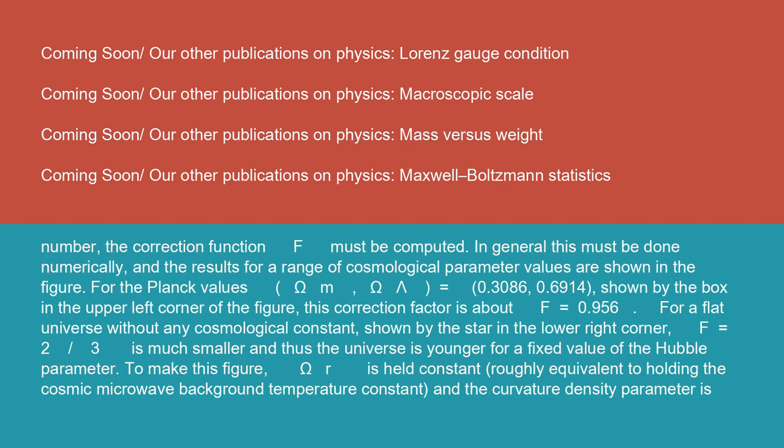To get a more accurate number, the correction function f must be computed. In general, this must be done numerically, and the results for a range of cosmological parameter values are shown in the figure. For the Planck values, omega m, omega lambda equals 0.3086, 0.6914, shown by the box in the upper left corner of the figure, this correction factor is about f equals 0.956.